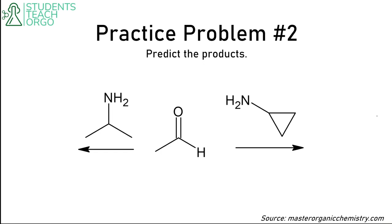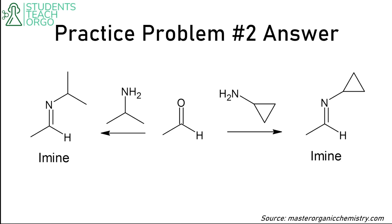Predict the products for the next set. You don't need to run through the full mechanism every time; just analyze the reactants to identify the final product. Both of these are primary amines, so both form imines. You're essentially replacing the carbonyl oxygen with a nitrogen, and everything else comes along for the ride.